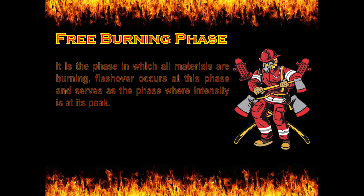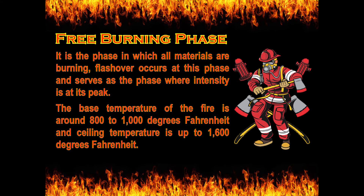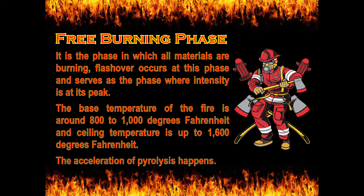Next would be the free-burning phase. It is the phase in which all materials are burning, flash over occurs at this phase, and it serves as the phase where intensity is at its peak. The base temperature of the fire is around 800 to 1,000 degrees Fahrenheit, and ceiling temperature is up to 1,600 degrees Fahrenheit. Flash over is the dramatic simultaneous combustion of all solid materials. The acceleration of pyrolysis — the thermal decomposition of materials at elevated temperature — also happens here.